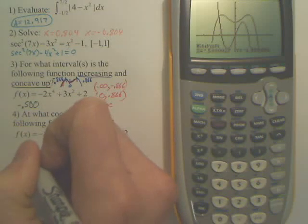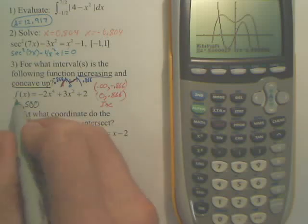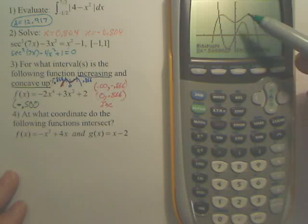So negative 0.5. That's where mine rounded. I think others could round a little bit differently. But negative 0.500. Isn't that the left side? Isn't it going to go from this point to this point? Isn't that where it's concave up?